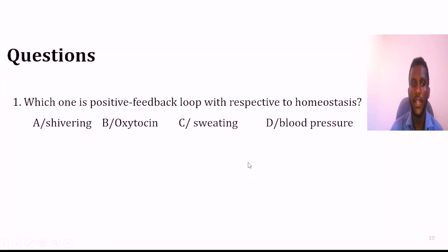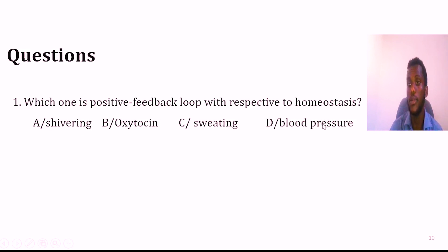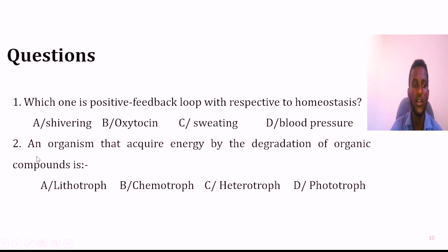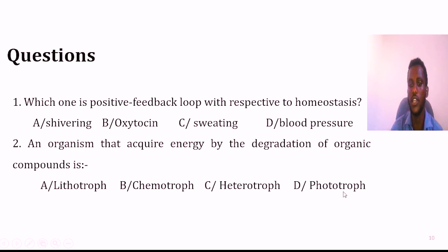Question number one: which one is a positive feedback loop with respect to homeostasis? A. Shivering. B. Oxytocin. C. Sweating. D. Blood pressure. Question number two: an organism that acquires energy by the degradation of organic compounds is: A. Lithotroph. B. Chemotroph. C. Heterotroph. D. Phototroph.